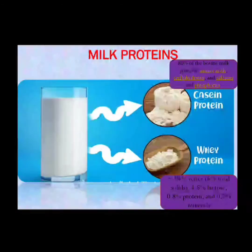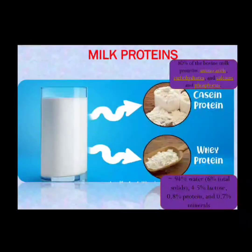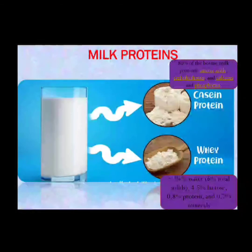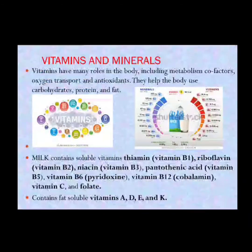So when you talk about milk proteins, you can categorize them as casein proteins and whey proteins. For example, when making paneer, the solid part that separates out is the casein protein and the liquid removed is the whey protein.